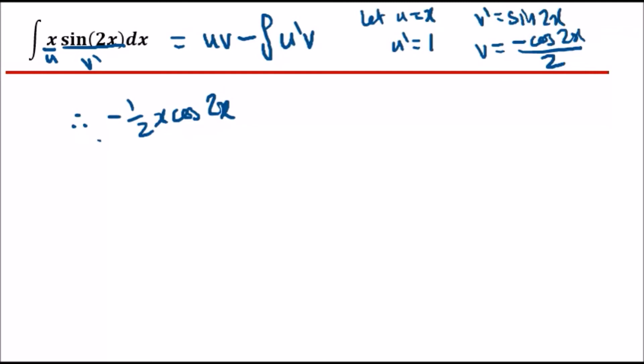And then minus the integral, so u prime is one, so thankfully it'll be one times the same thing, so minus cos 2x over 2. And over here well we could just take 2 outside, so I can say half outside, I can say positive half integral of cos 2x dx.